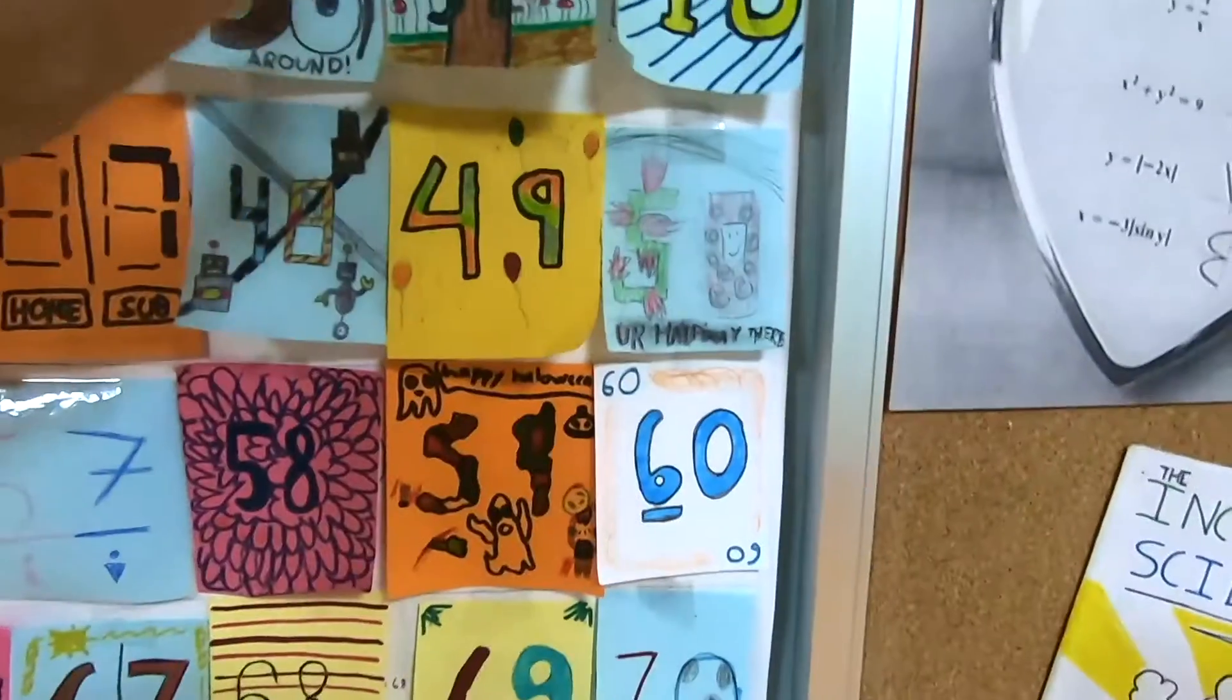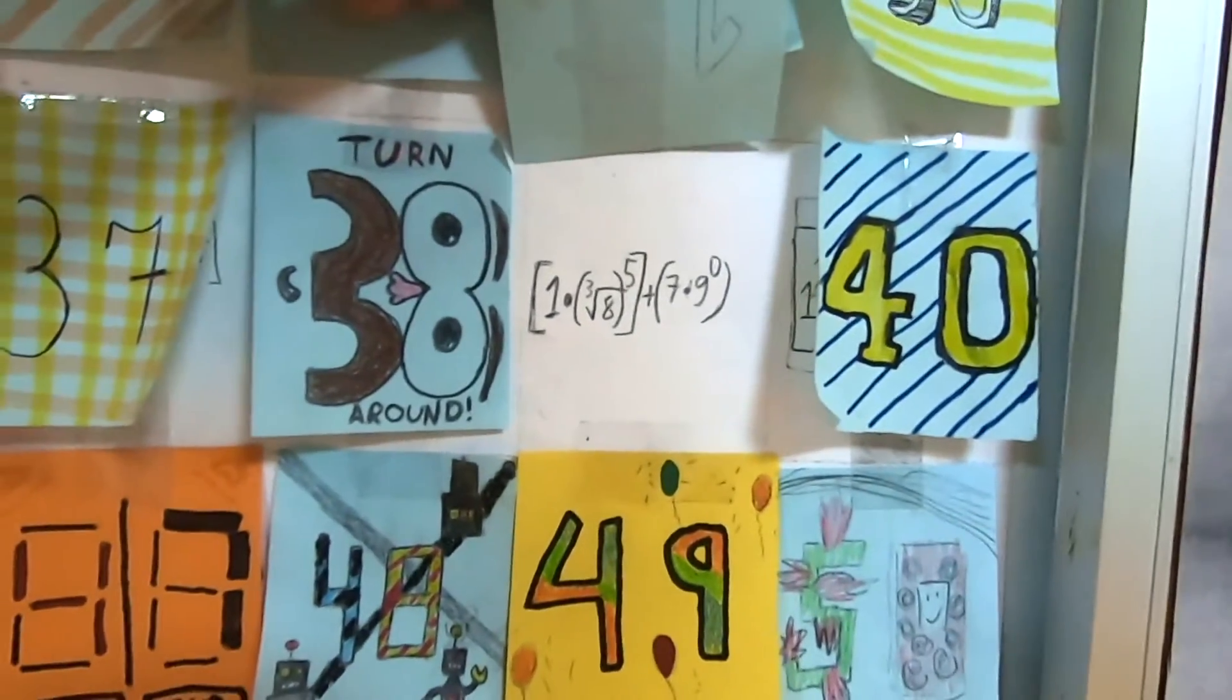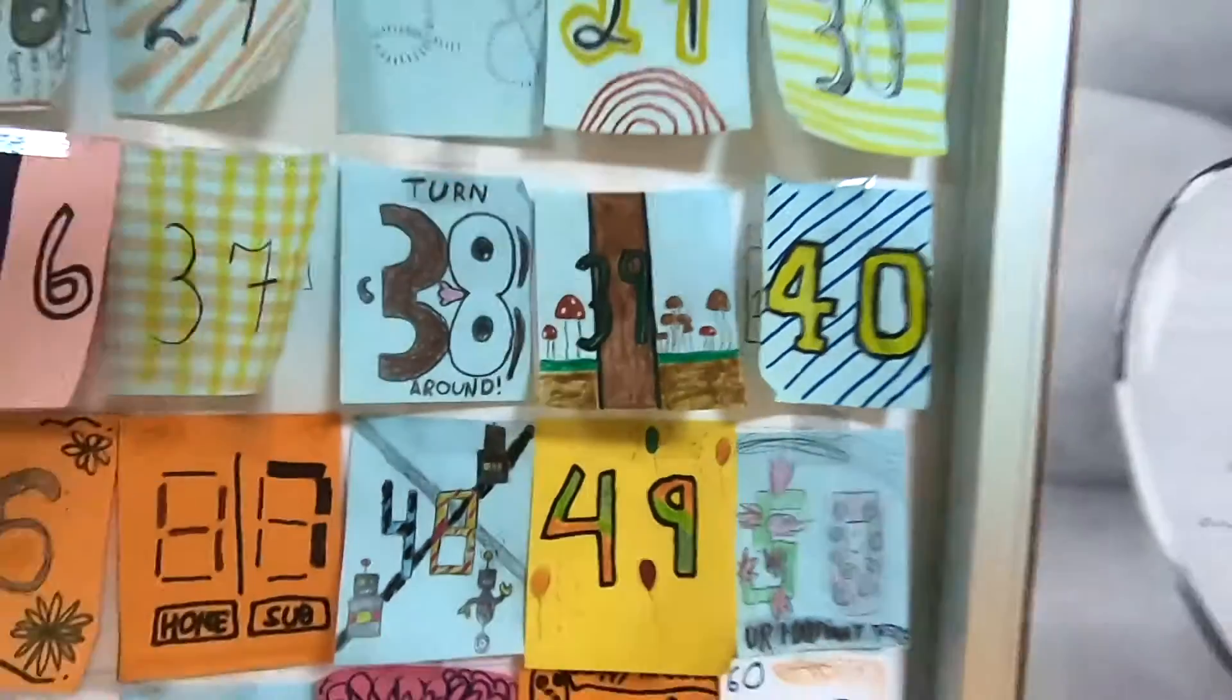For example, 39. 39 looks a little tricky there. We'll use the cube root of 8 to the 5th power.